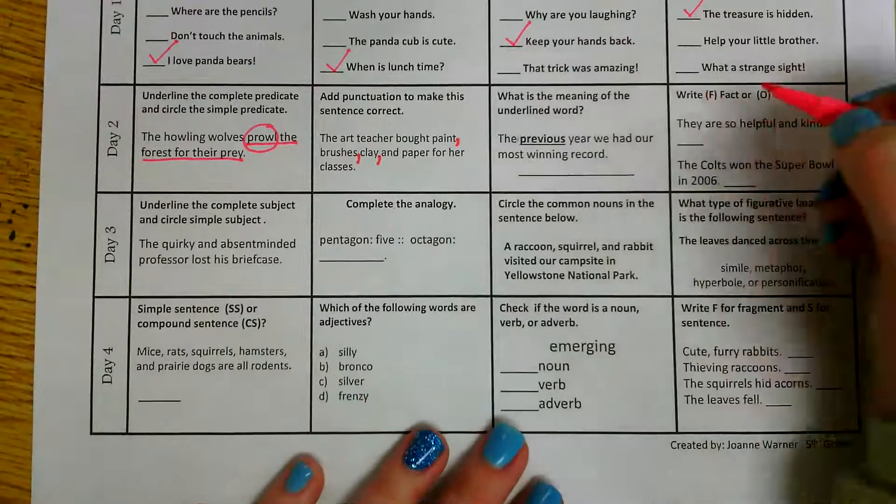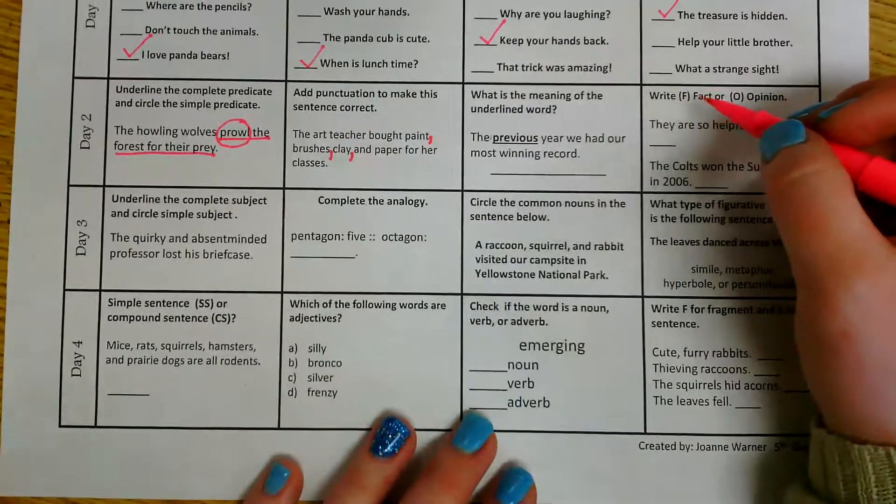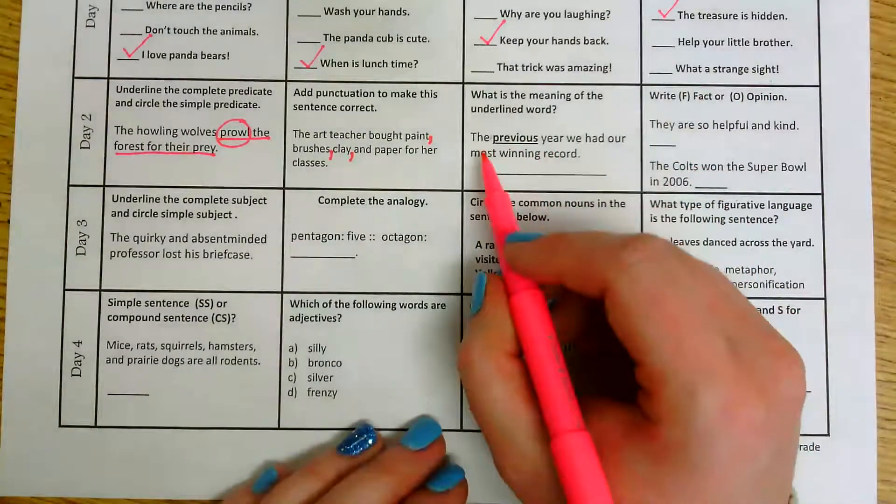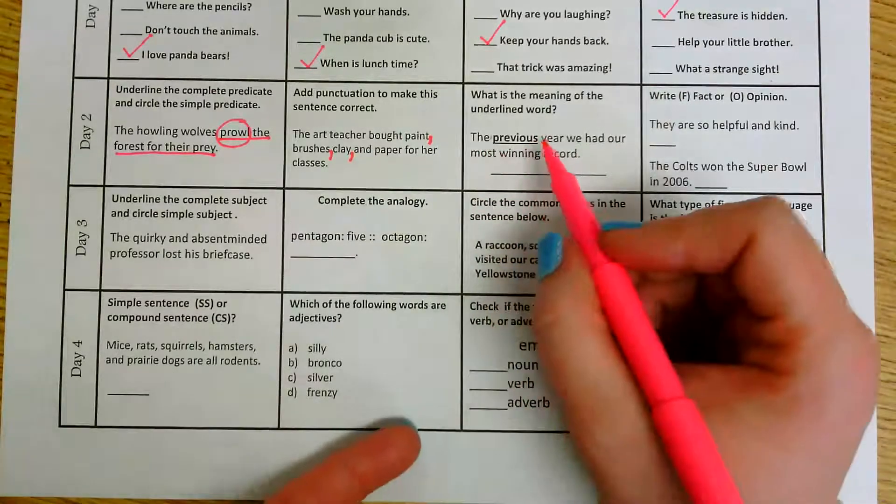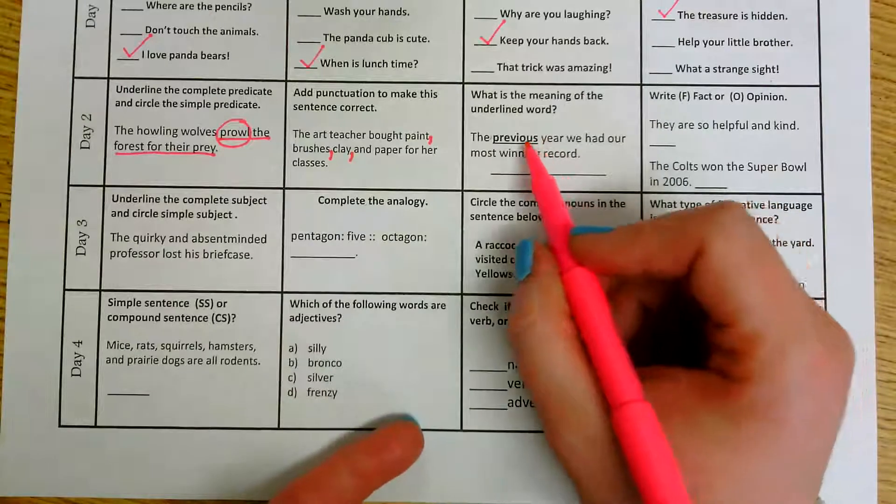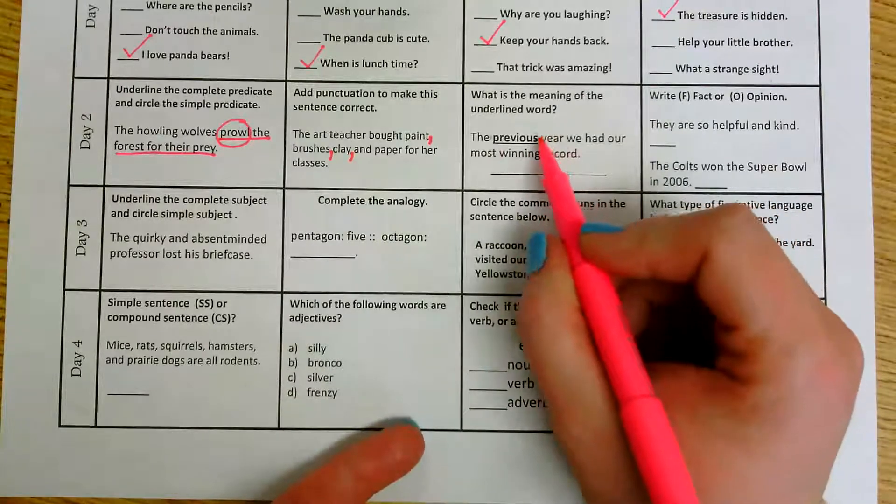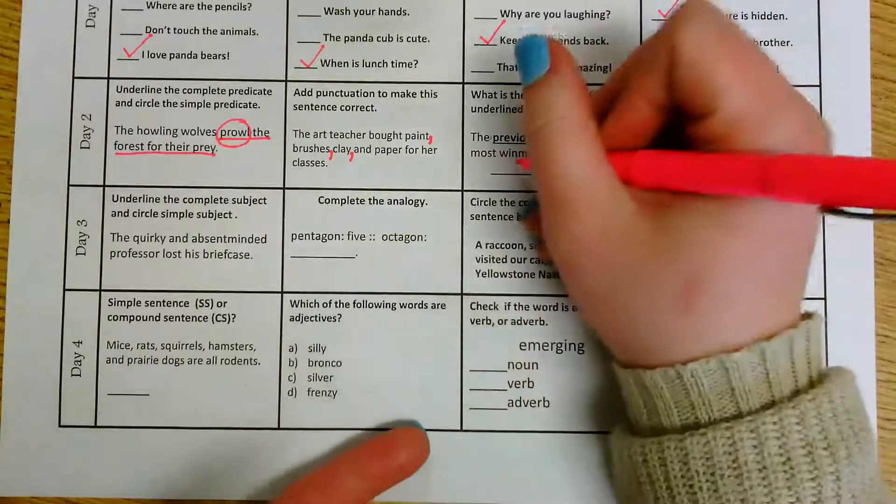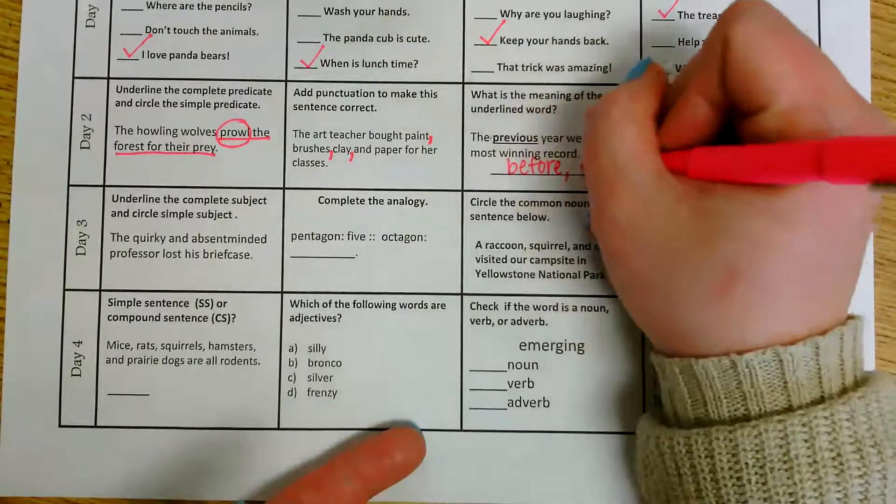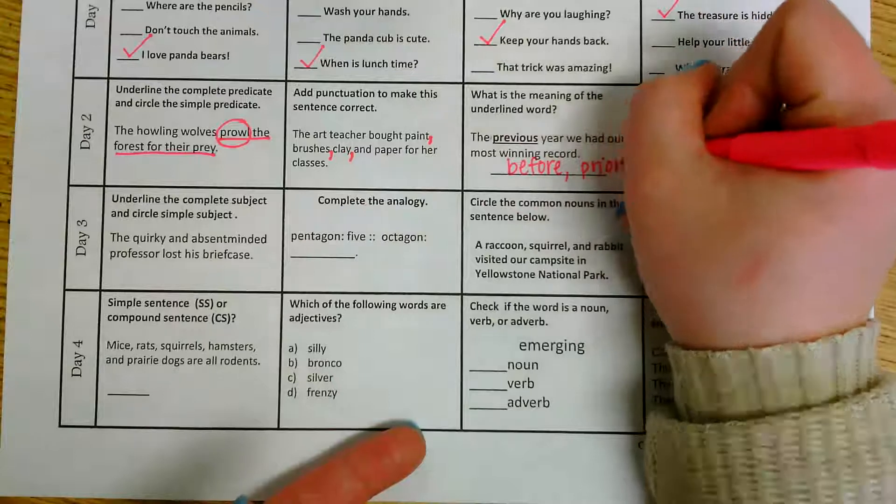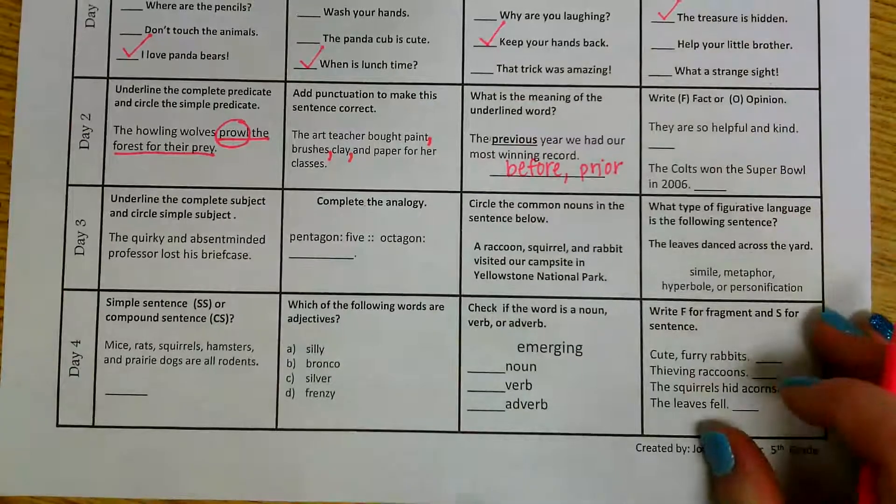The next one asks us what is the meaning of the underlined word. Okay, the previous year we had our most winning record. The word previous is underlined. So we are talking about a year that already happened, so the year before or you could say the year prior. So it's not going to be the current year that you're in. It's going to be one in the past.